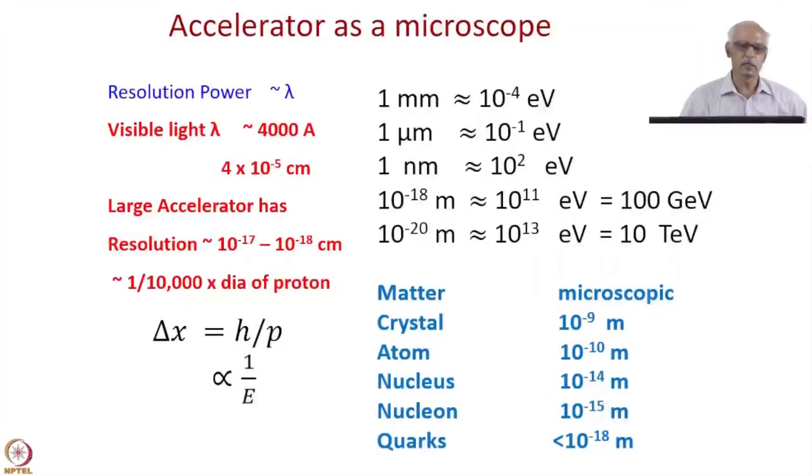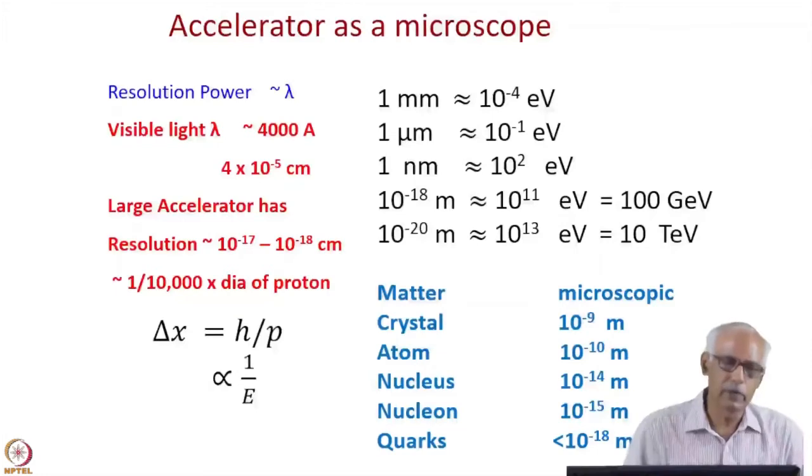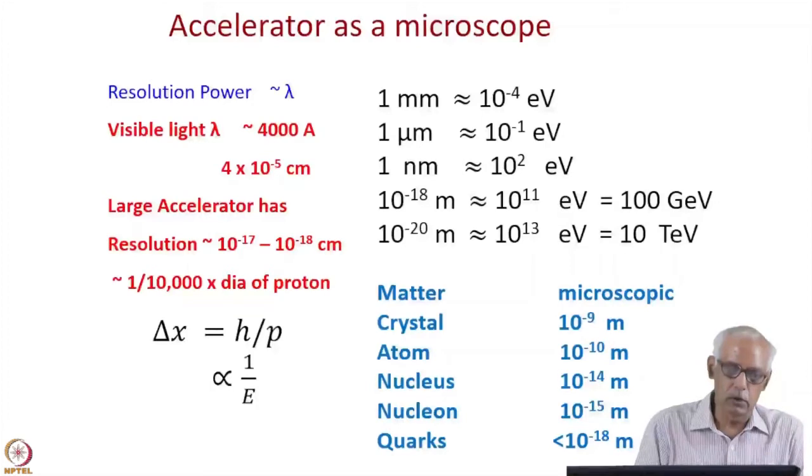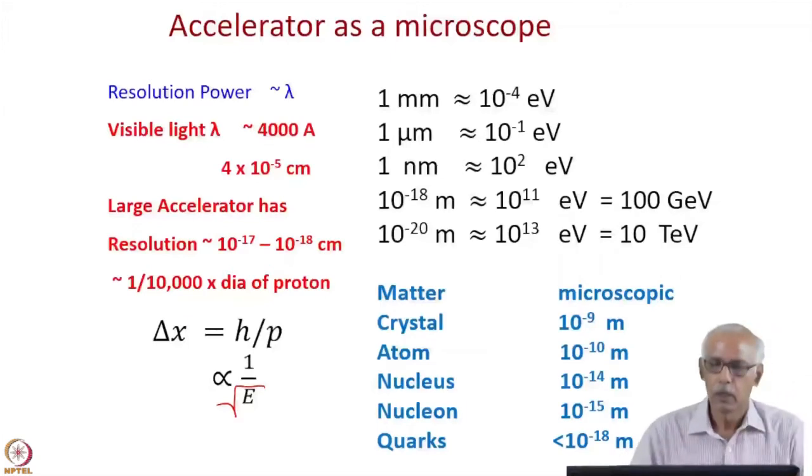How to make a microscope. In the beginning I said that an accelerator is nothing but a microscope. Why is it so and what kind of things are required? Here it is given on the left hand side that the resolution is inversely proportional to the momentum, which is inversely proportional to the root E at low energies and at high energies proportional to 1 by E. If it is high energy you can get better resolution and therefore you will be able to study much smaller dimensions.